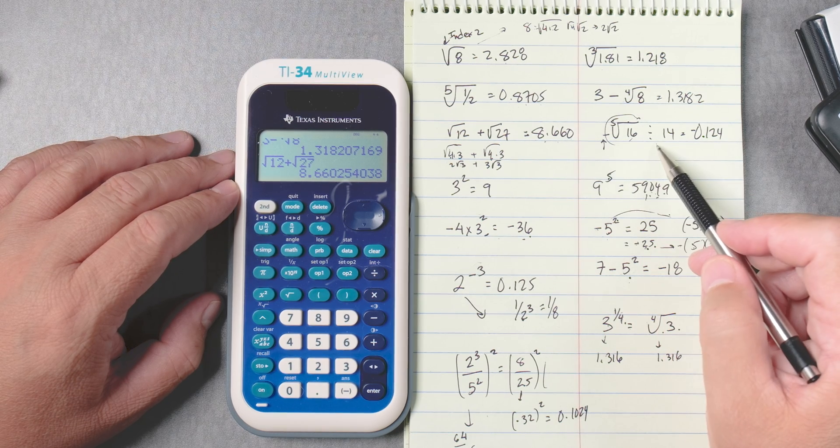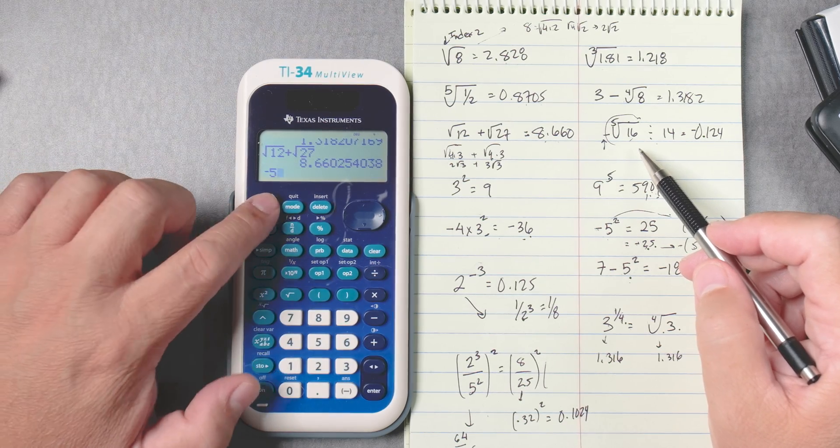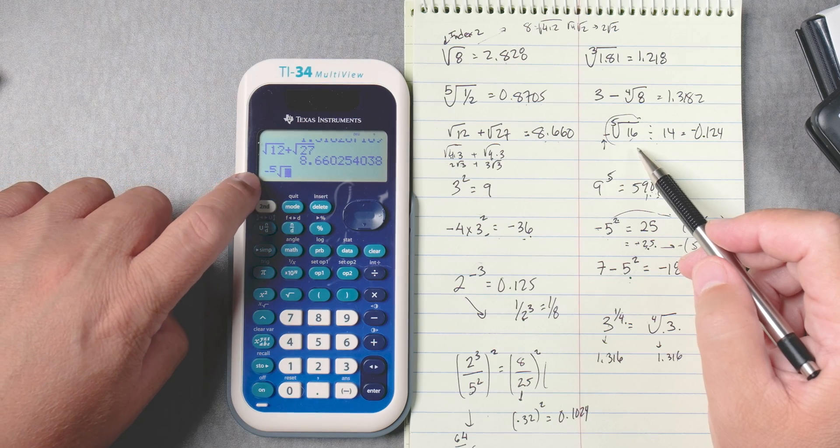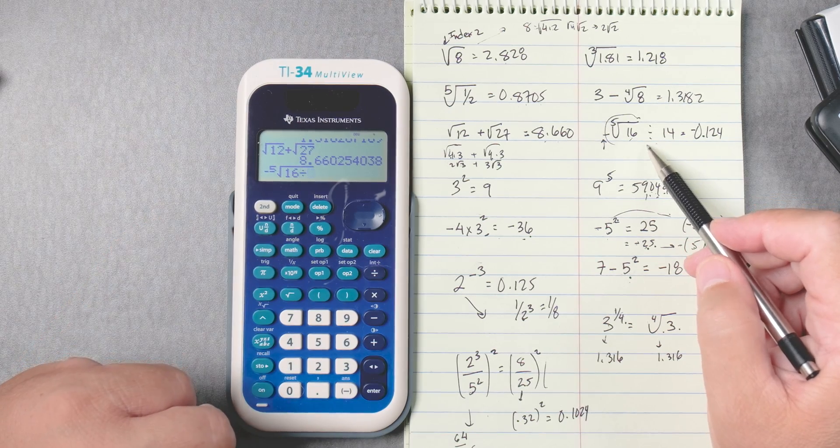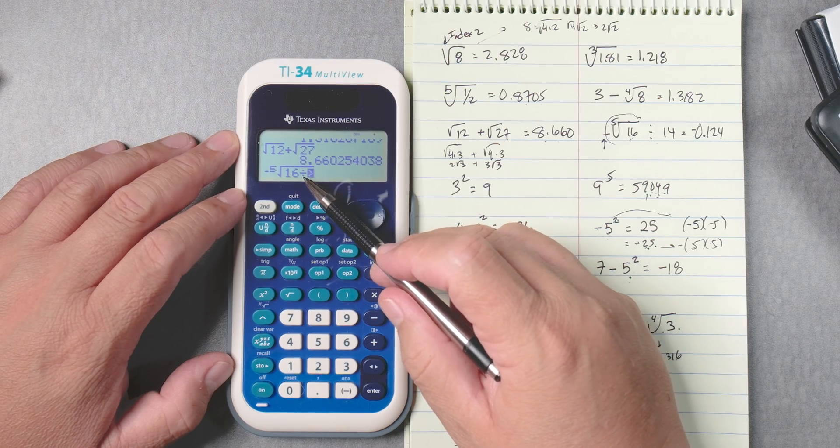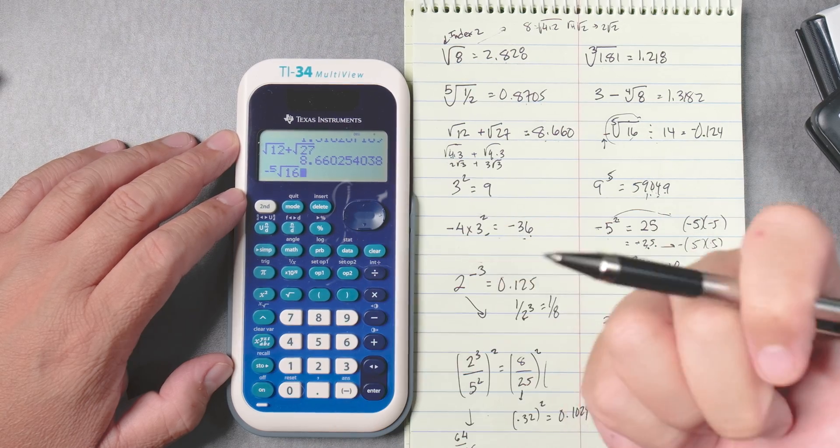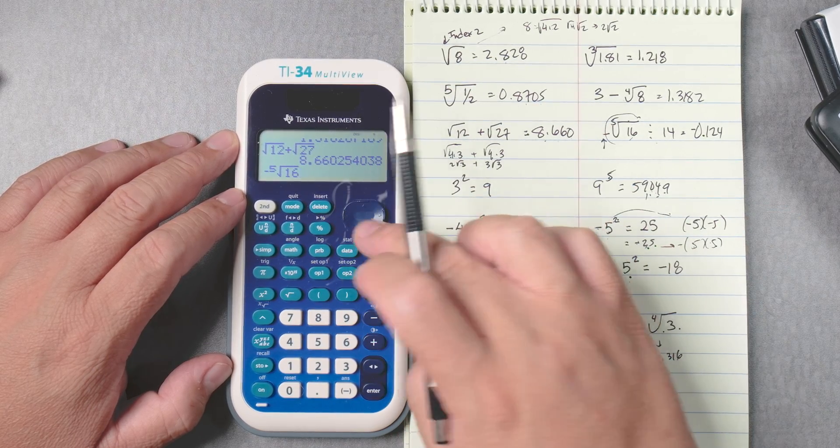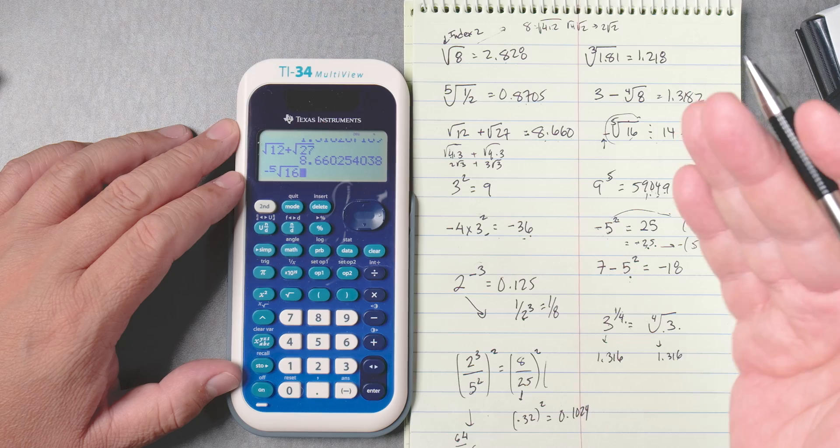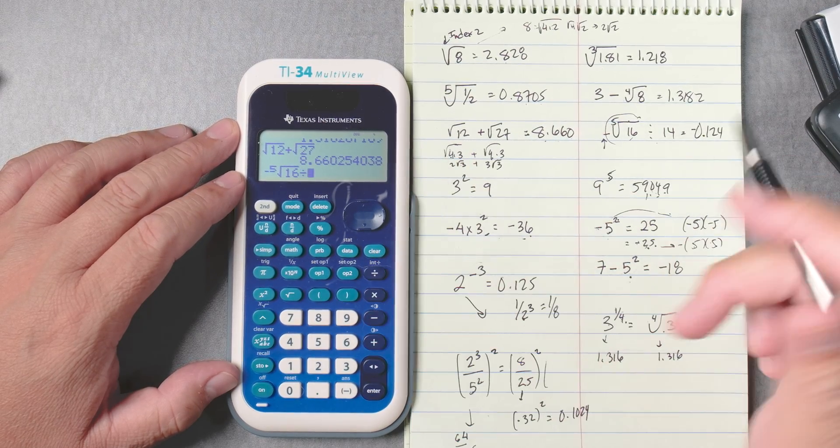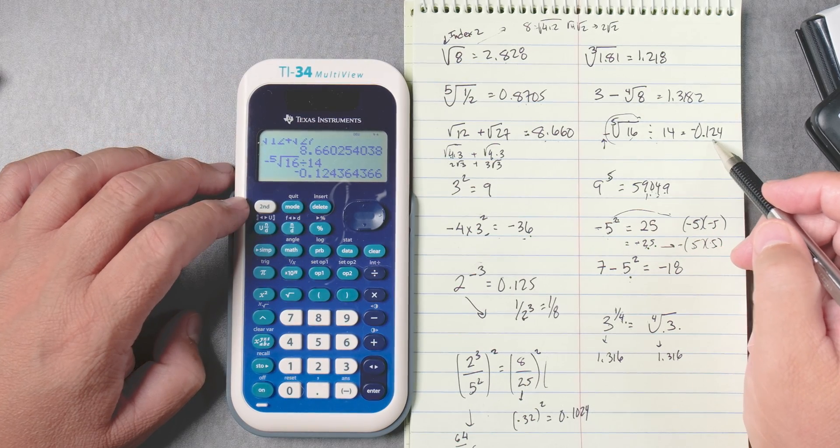Okay, the next problem looks complicated, but it's pretty straightforward. You got to press the negative key first, then 5, second, caret, so this is negative fifth root of what? 16. Divided by—see, I made a mistake there. This division is inside, so what we're going to do is delete that and press the joystick. We move it outside of the root, divided by, 14, enter, and then you get negative 0.124. Perfect.